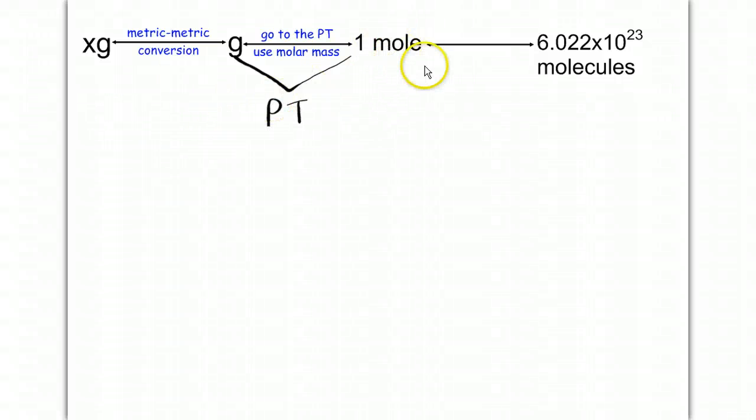Once we can change to mole, then we can change to molecules, and we're going to use what's known as Avogadro's number of molecules, which is 6.022 times 10 to the 23rd, and this is Avogadro's number of molecules.